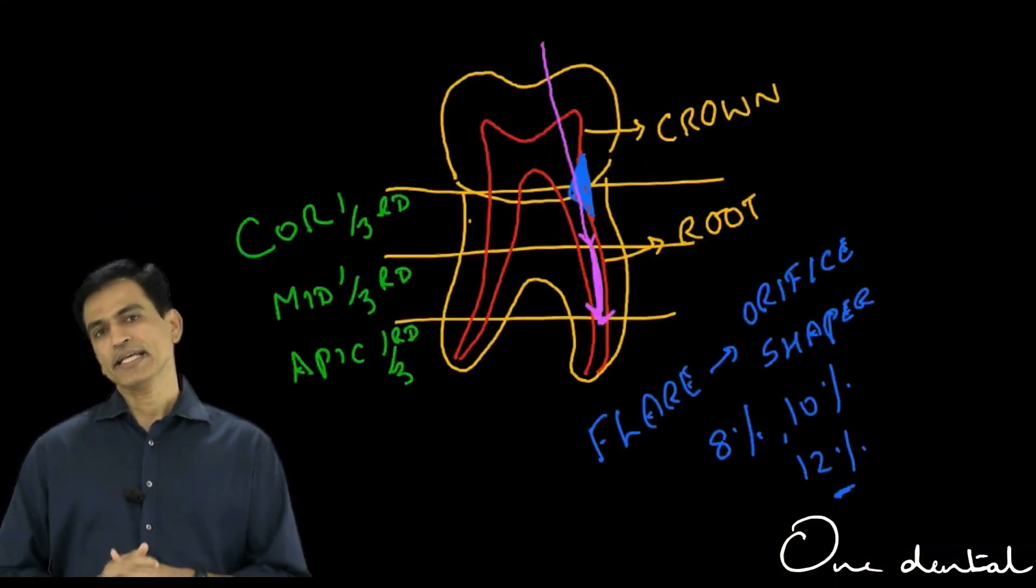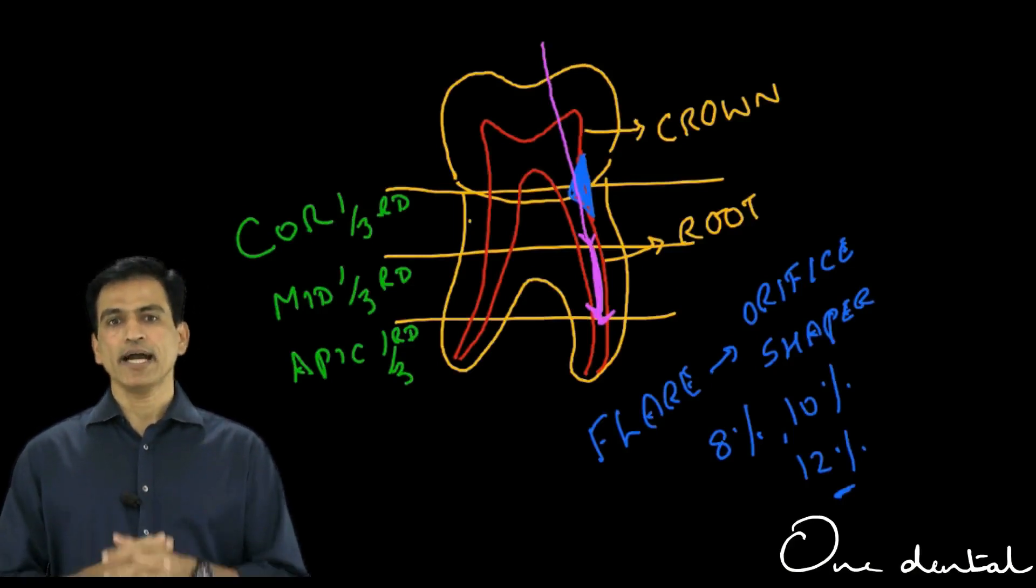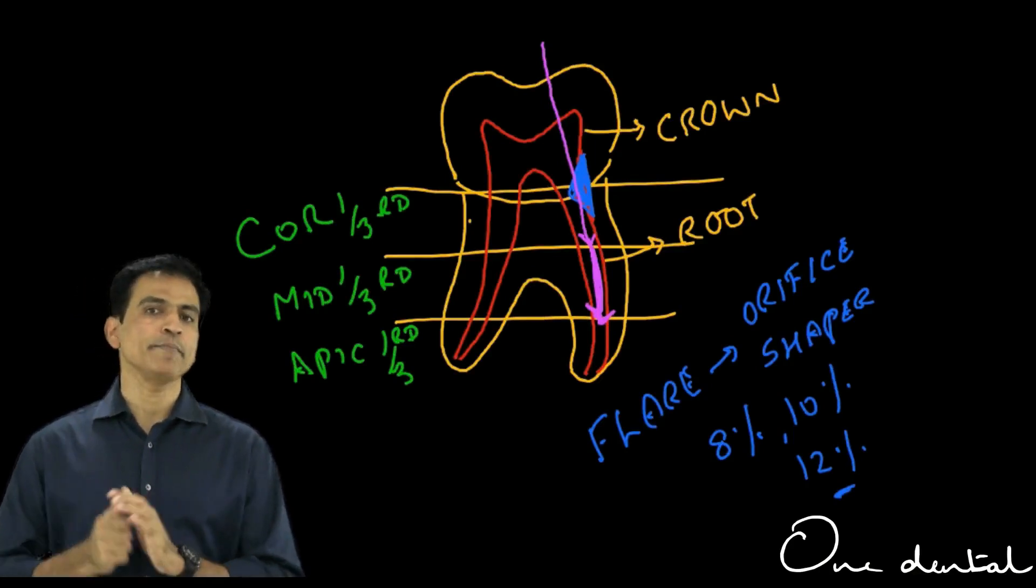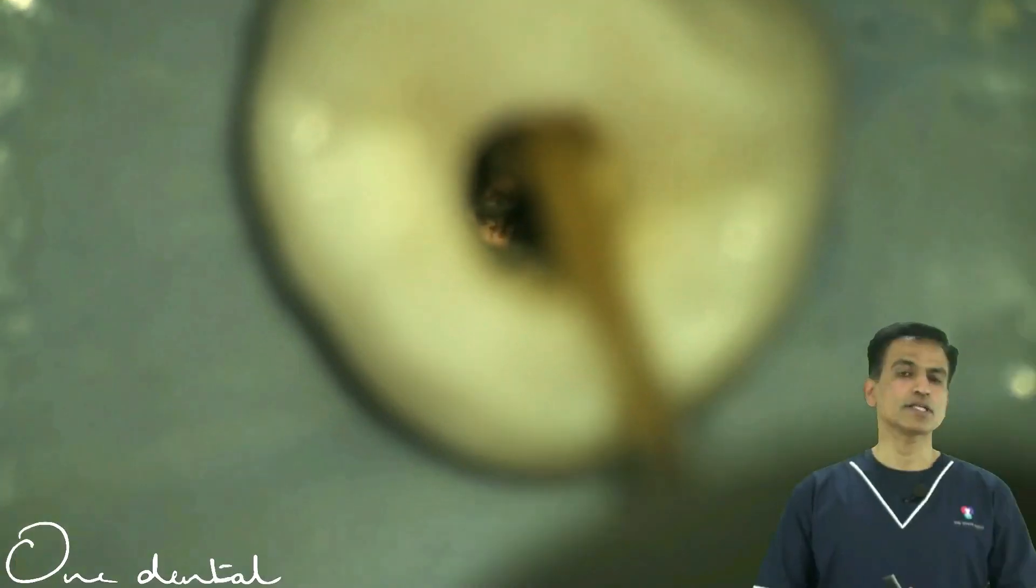To see the next step, you need to use a hand file, a number 10 file, a glide path file to stepwise enter with a watch winding motion or a balance force to go to the middle third. This is called a square technique.